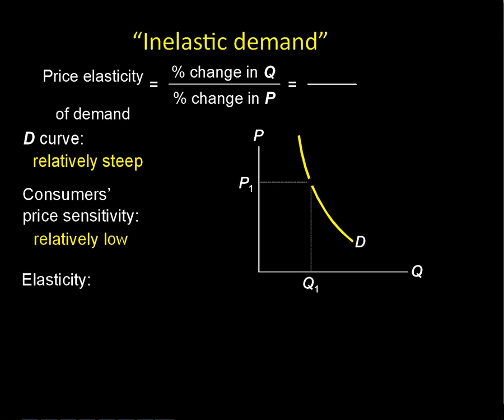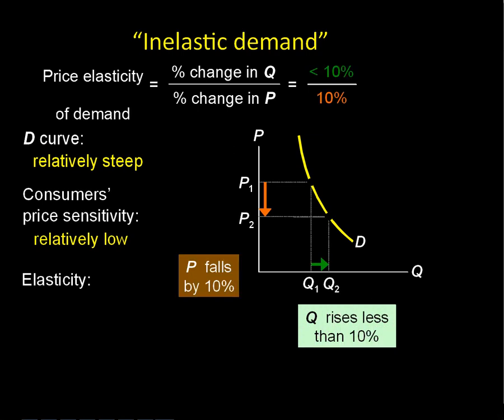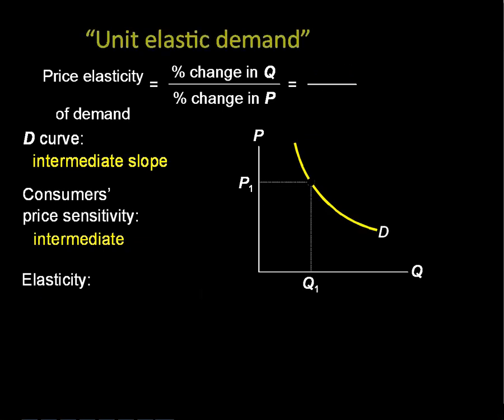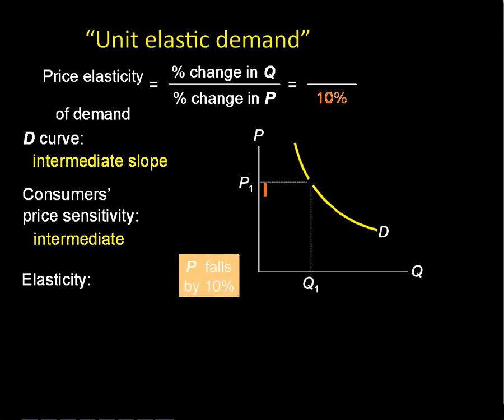This is inelastic demand: the price falls by 10% and quantity increases by less than 10%. The numerator is less than the denominator, so you end up with a number less than one. The rule is: if it's less than one, that's inelastic demand.